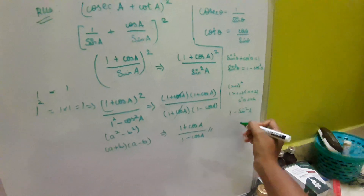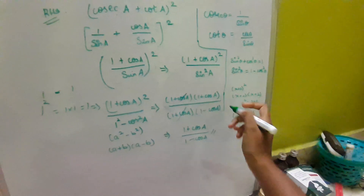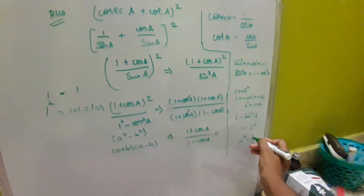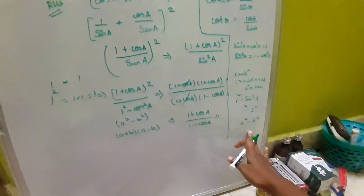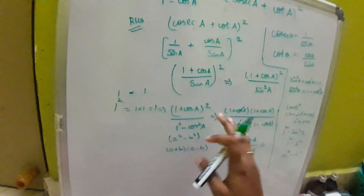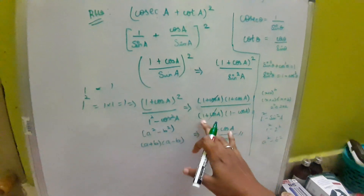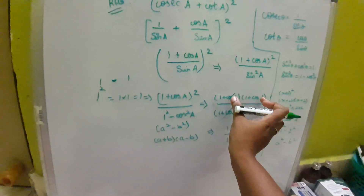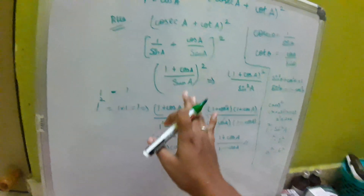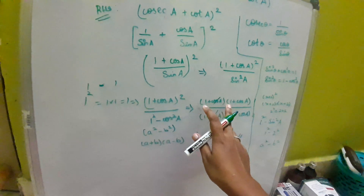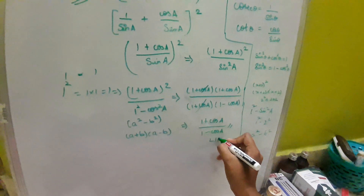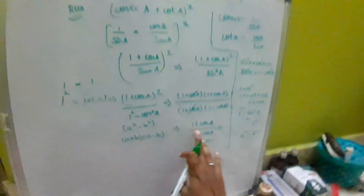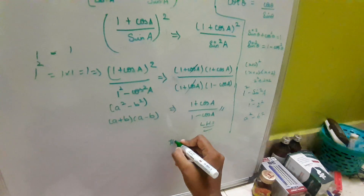If you see a denominator like 1 minus sin²A, you can automatically substitute the A² minus B² formula. That is why we split 1 plus cos A into 1 plus cos A times 1 plus cos A instead of using the A plus B whole square formula. We cancelled the similar values, got the LHS, and since we started from the RHS, we have proved the LHS — hence proved.